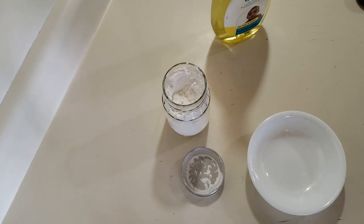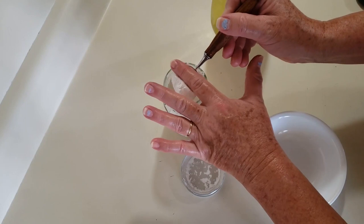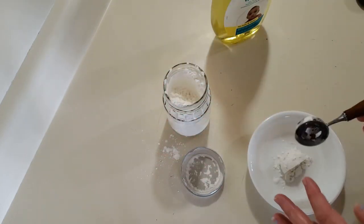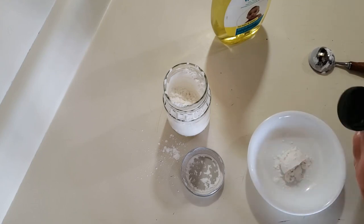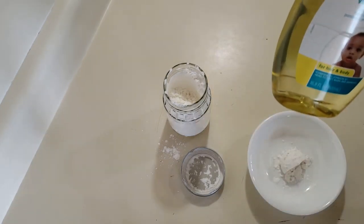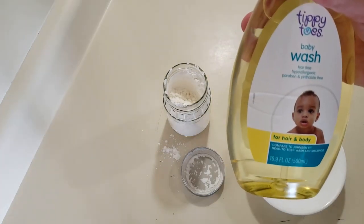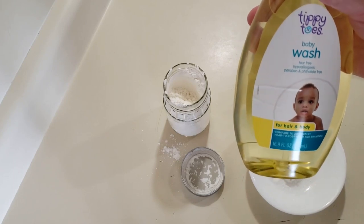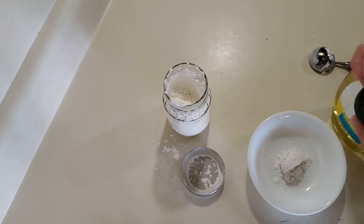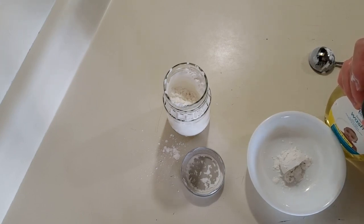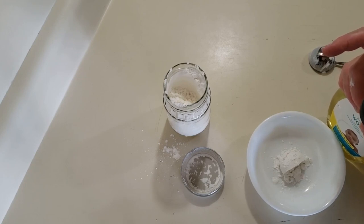So we're going to mix together equal parts of cornstarch, and I'm just doing small portions. And we're going to use baby wash. I'm using Tippy Toes baby wash, and this is hypoallergenic and tear free. Of course it's not food, so you don't want them to eat it. And it had some other things that it was free of, actually several.